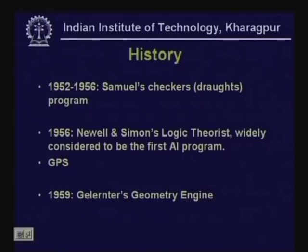In 1952 to 1956, Samuel designed the checkers-playing program. In 1956, Alan Newell and Herbert Simon designed the Logic Theorist, and later built the General Problem Solver. In 1959, Gelernter developed the Geometry Engine for solving plane geometry problems. In 1956, a meeting was held at Dartmouth where the first researchers in AI met, and in this month-long meeting the term artificial intelligence was adopted, bringing together the founding fathers of AI for the first time.